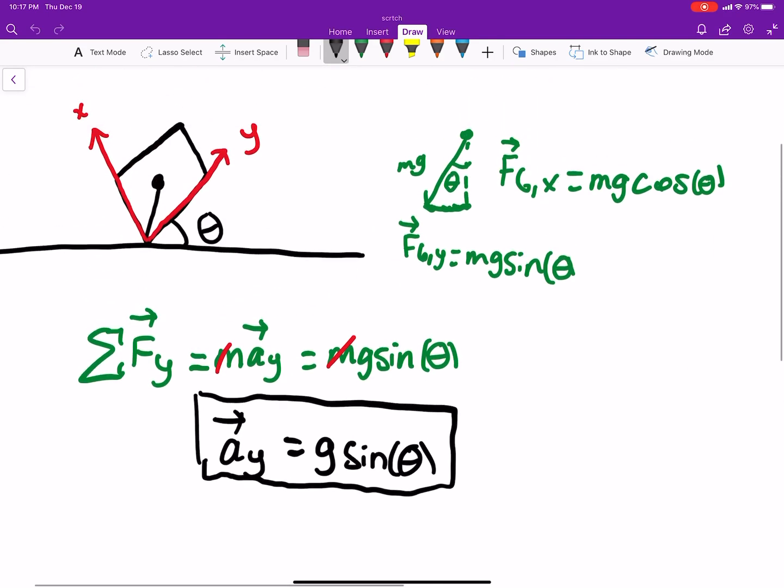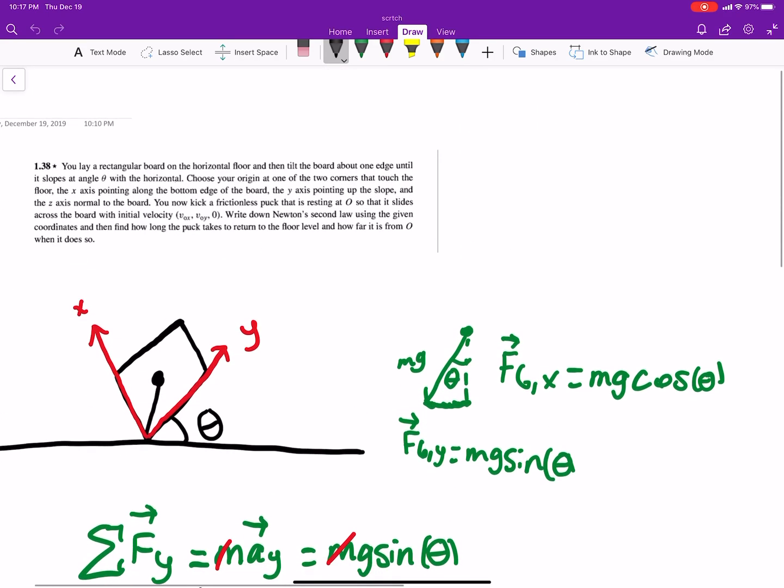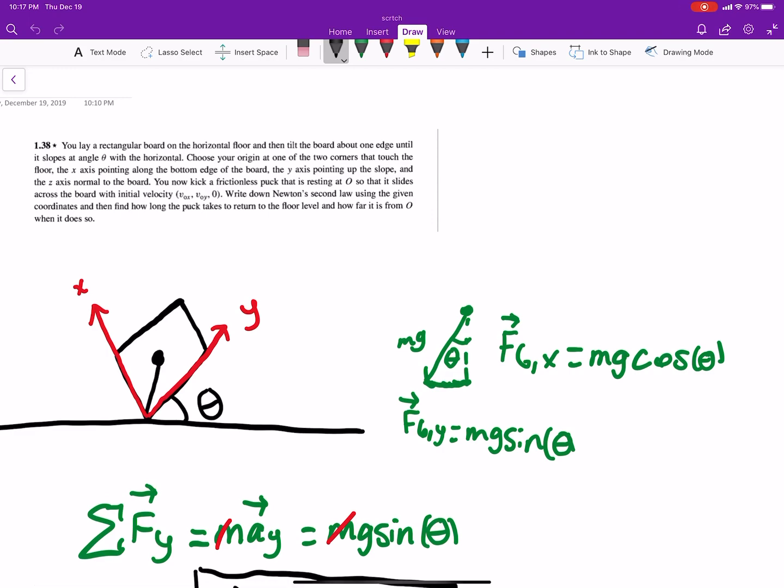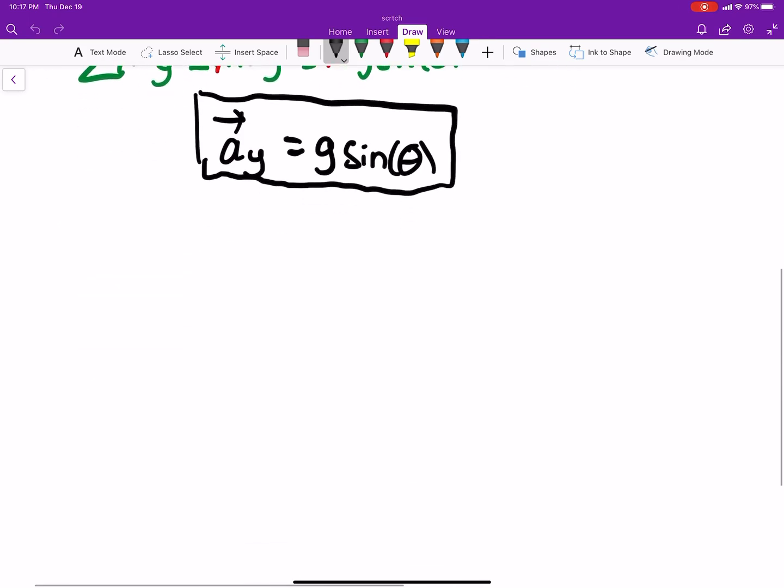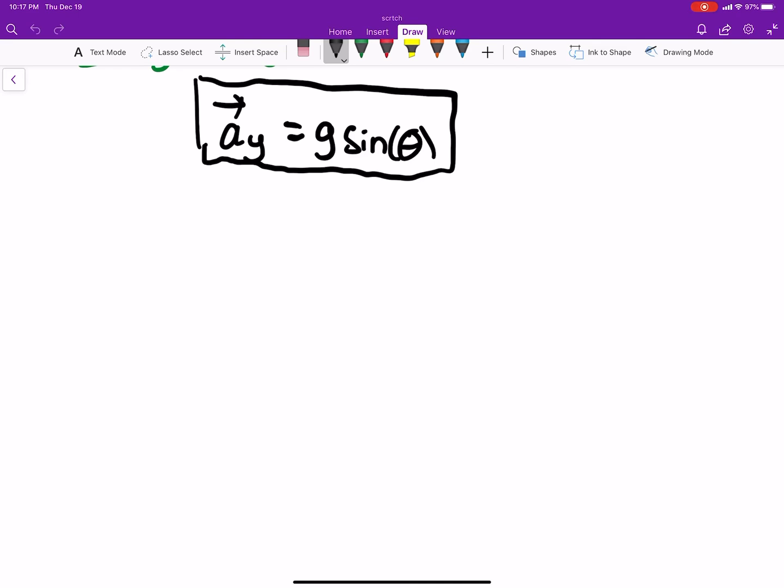So we want to find how long it takes for it to return to the floor. Well, our accelerations are constant, we can use our kinematics. We basically derived those earlier, so I'm not going to do it again, but essentially your y is going to be equal to v naught in the y direction times time plus one half a t squared.